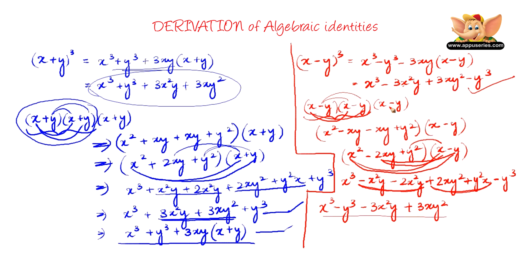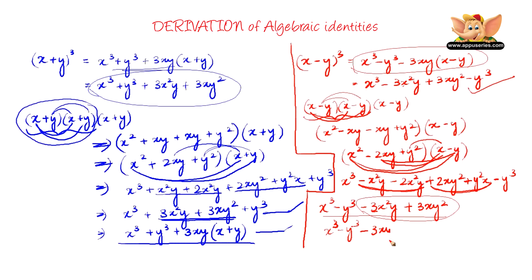So we get x cube minus 3x square y plus 3xy square minus y cube, which matches the expanded form. To get the factored form, we take minus 3xy as common from the middle two terms, leaving x minus y. So x minus y the whole cube equals x cube minus y cube minus 3xy into x minus y. Here we have both forms of expansion for x minus y the whole cube.